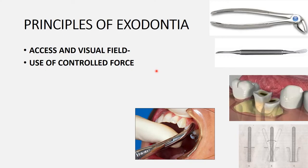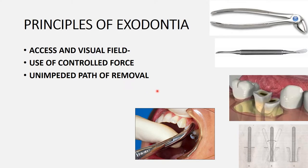The next basic principle is the unimpeded path of removal. Whenever there is resistance to removal, tooth sectioning is required. Obstructions are encountered with impacted teeth, malposed teeth, or deeply carious teeth. In such cases, the tooth must be sectioned before removal to avoid complications during extraction.